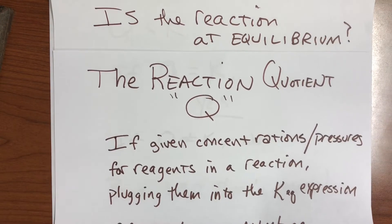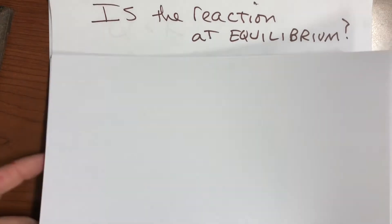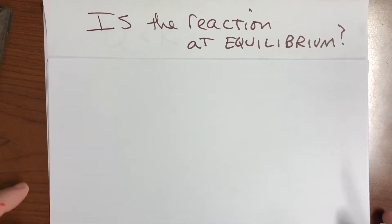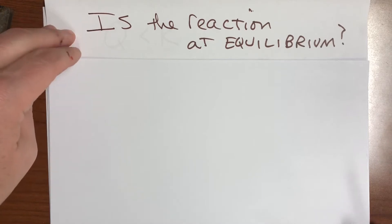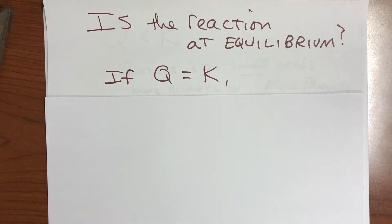If you want to know whether the reaction is at equilibrium yet or not, you can just plug those numbers in, calculate Q, and then it's pretty simple. If those numbers spit out the equilibrium constant, then yeah, it's at equilibrium.